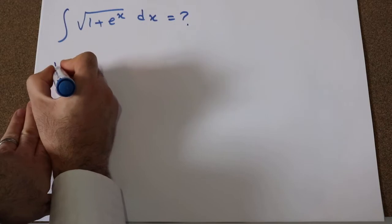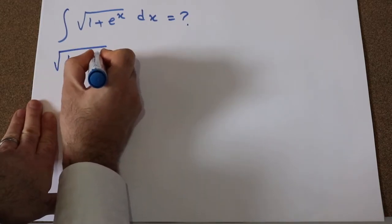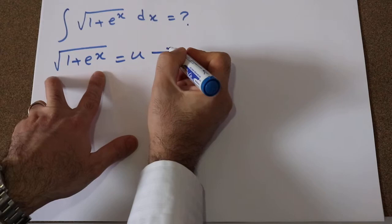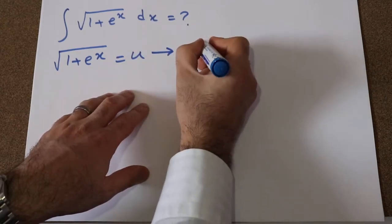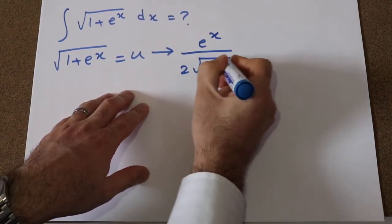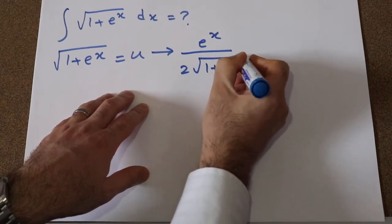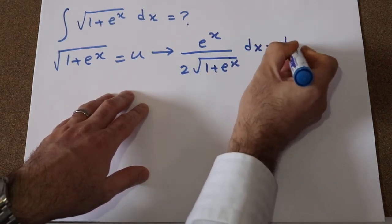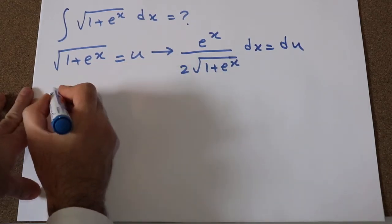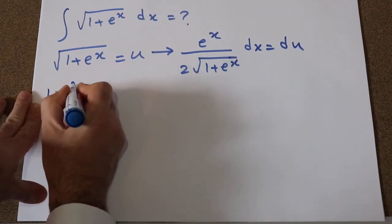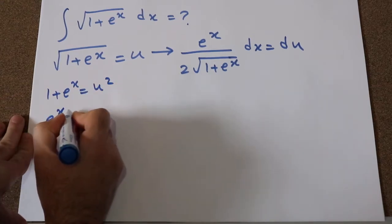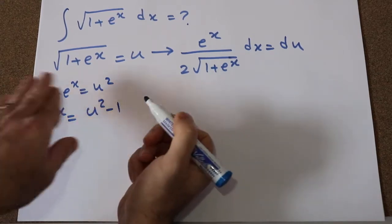If you define √(1 + eˣ) as u, and if you take the derivative from each side of this equation, that will be eˣ divided by 2√(1 + eˣ) dx equal to du. From this definition, you can conclude that 1 + eˣ is equal to u², in other words, eˣ is equal to u² minus 1.